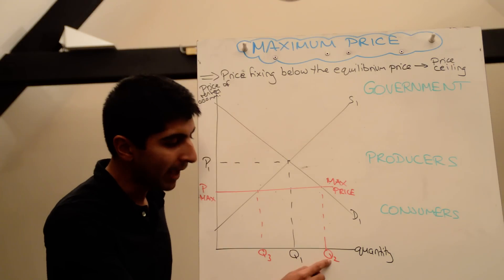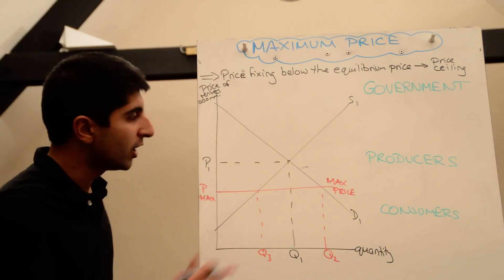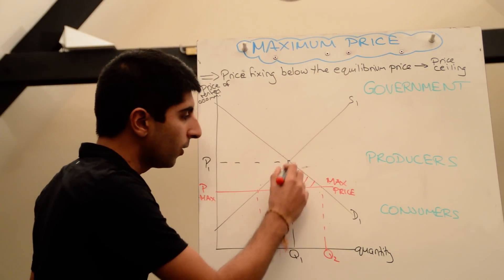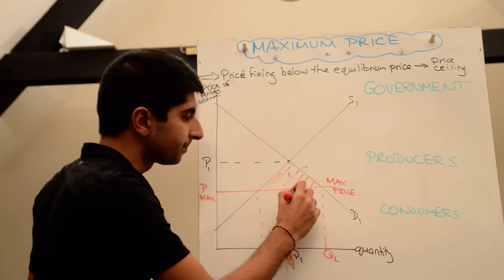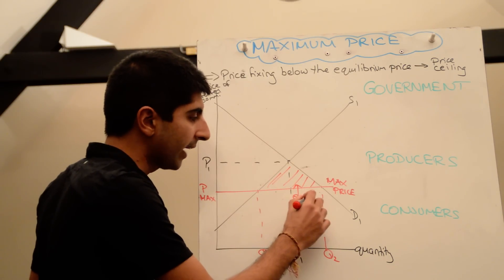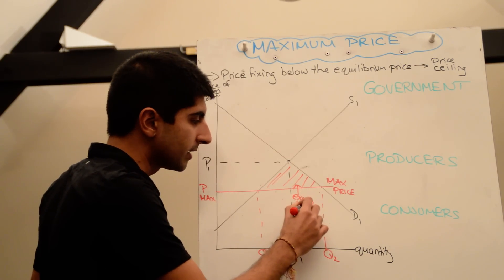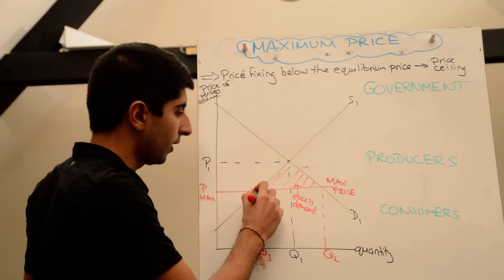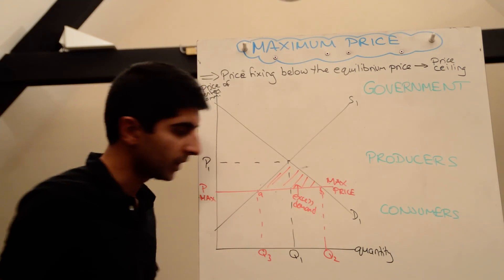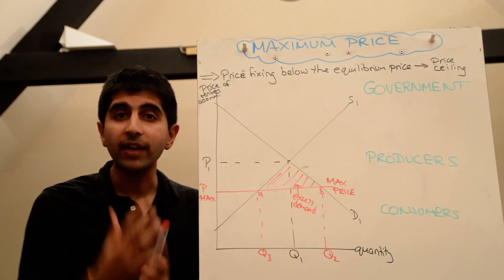Straight away you'll see in the market, demand is higher than supply. Shading the triangle down below, that gives us a value, the value of the excess demand. So I'll call that A, and I'll call that B. So there we have excess demand.